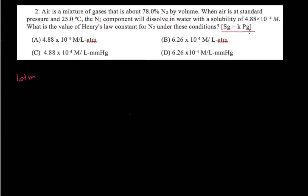The question gives the formula. The solubility of the gas equals the constant we're looking for times the partial pressure of the gas. We are given the solubility of the gas, and we'll be able to quickly find the partial pressure, then isolate the constant and solve for it.